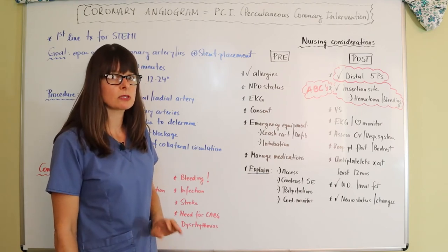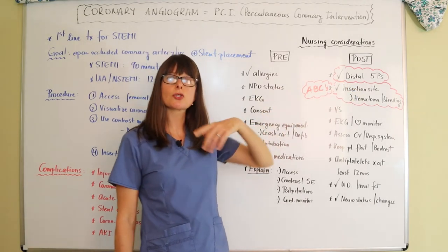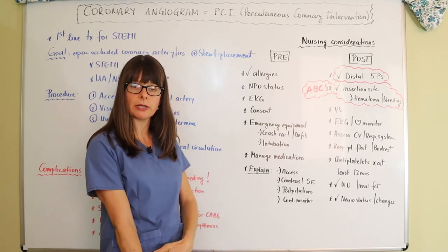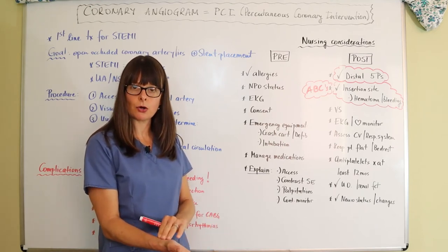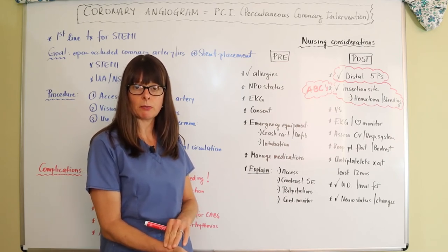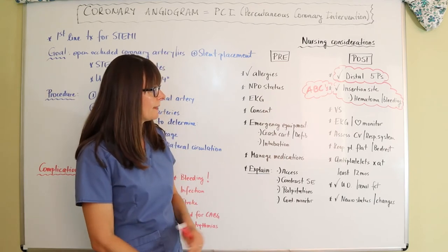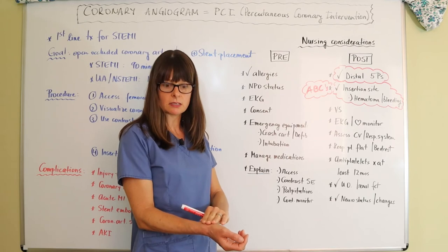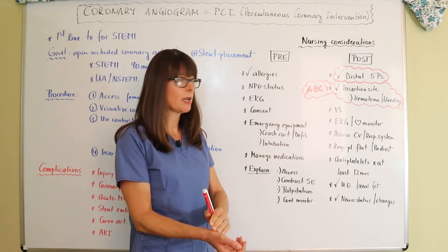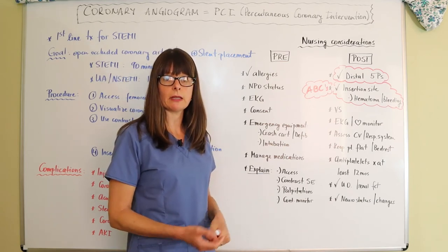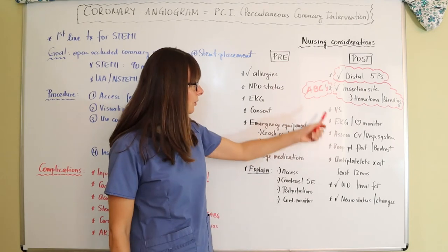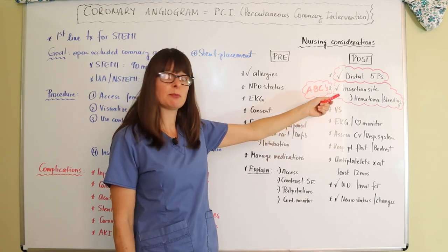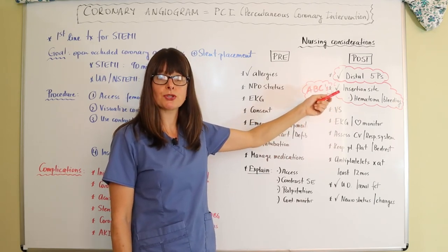After the procedure, the most important assessment is checking the distal circulation — the five P's. If the radial artery was used, assess the hand; if the femoral artery was used, assess the foot. Manipulating an artery can lead to neurovascular complications. The insertion site is also a high priority — since access goes through an artery, there is a high risk for bleeding, which can lead to a significant hematoma. Remember ABCs: bleeding relates to circulation, making it a high-priority concern on exams.